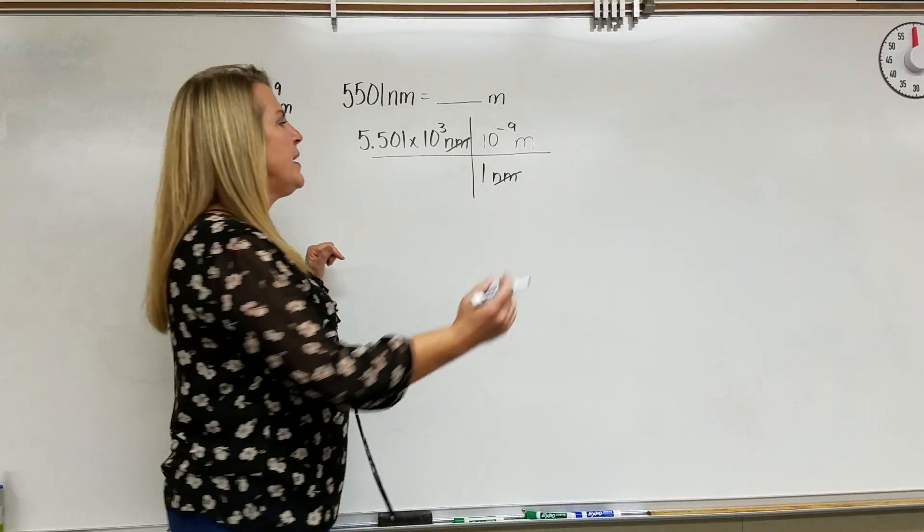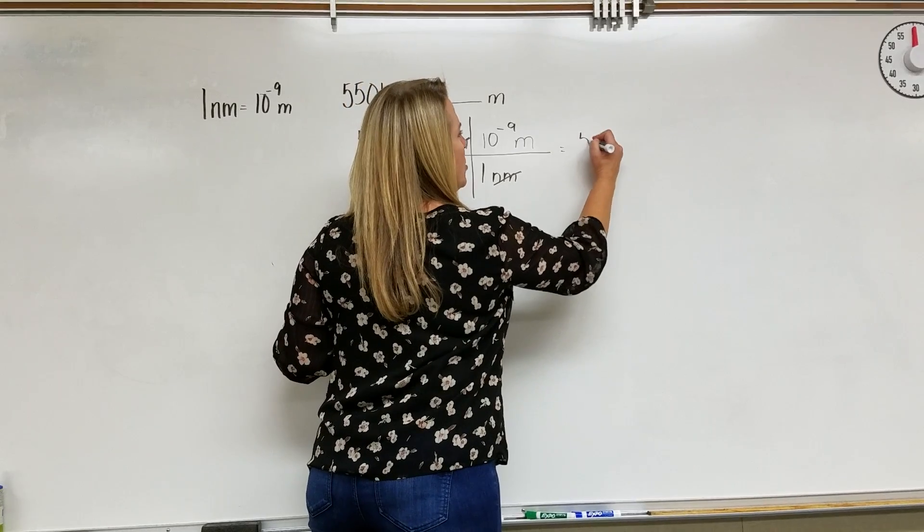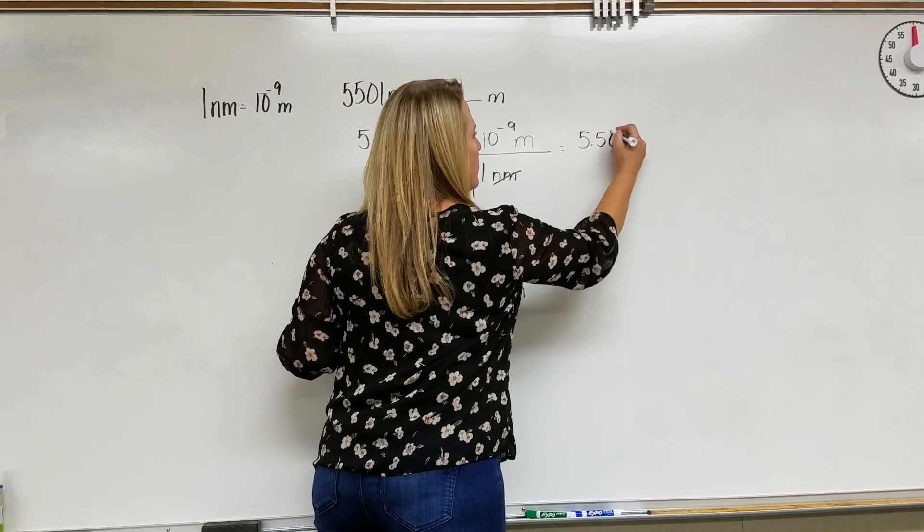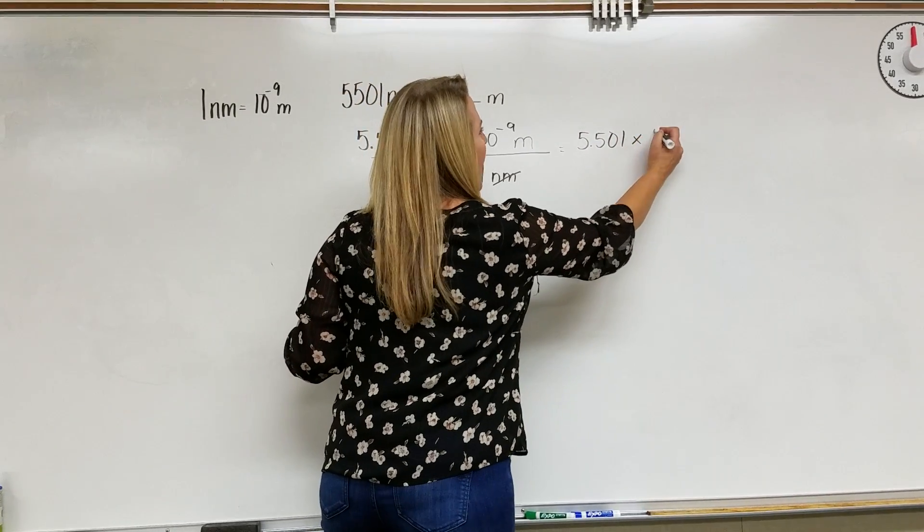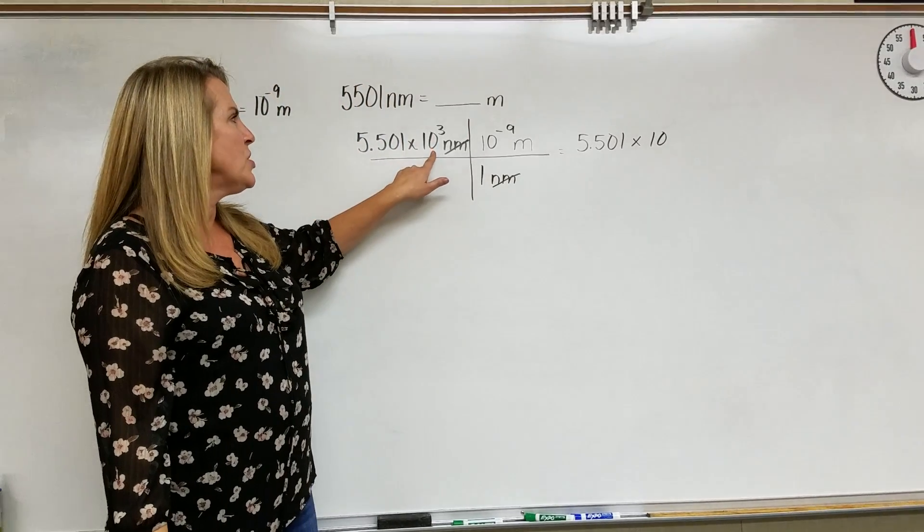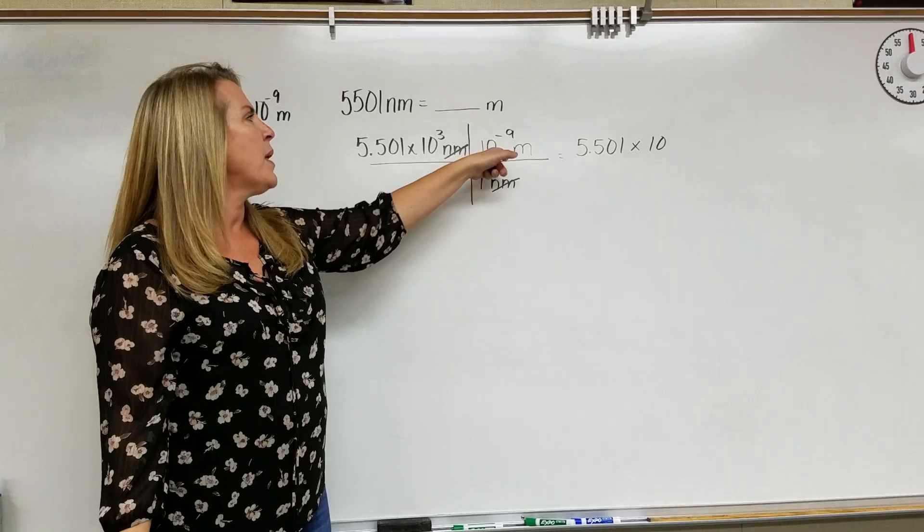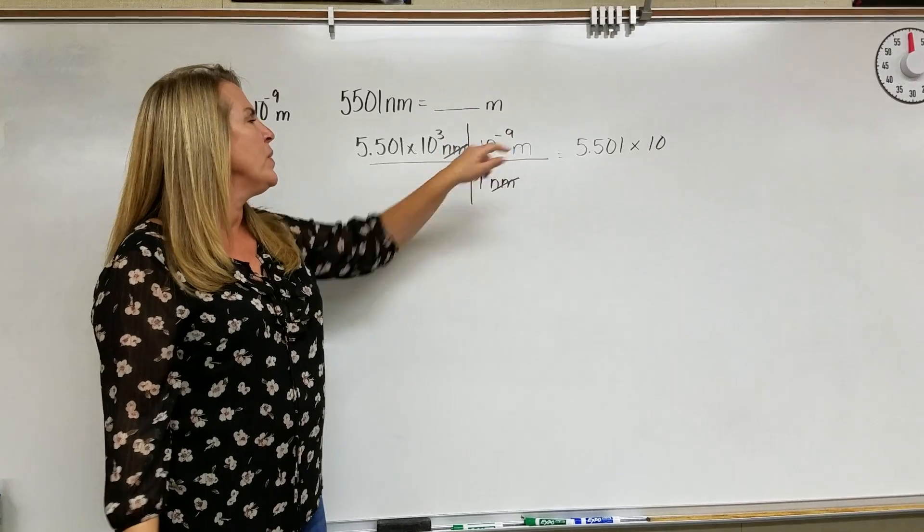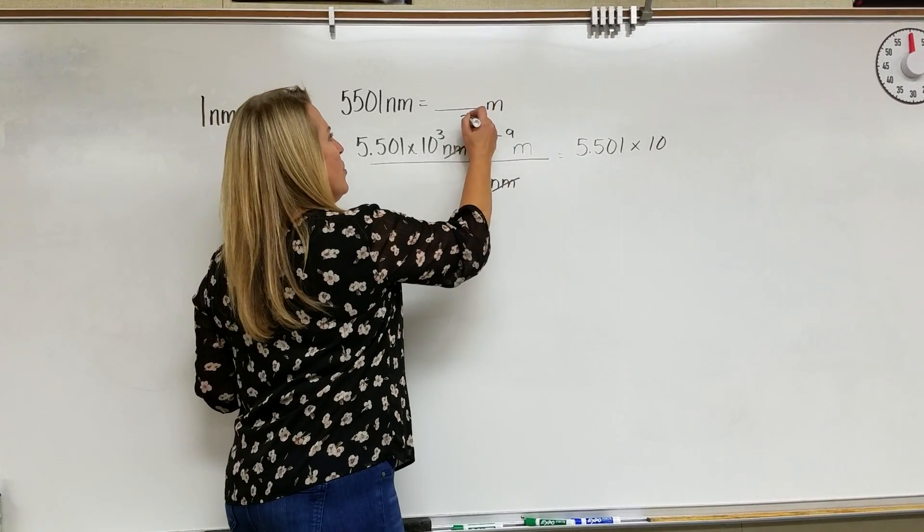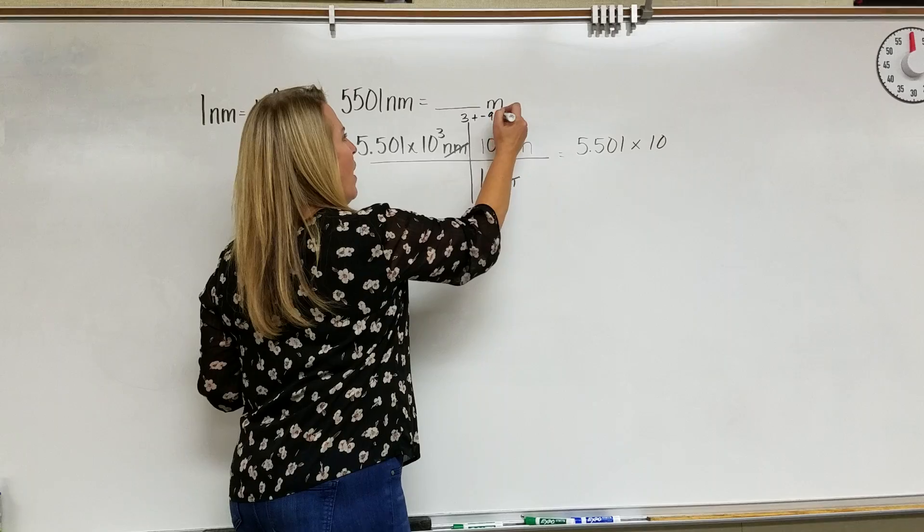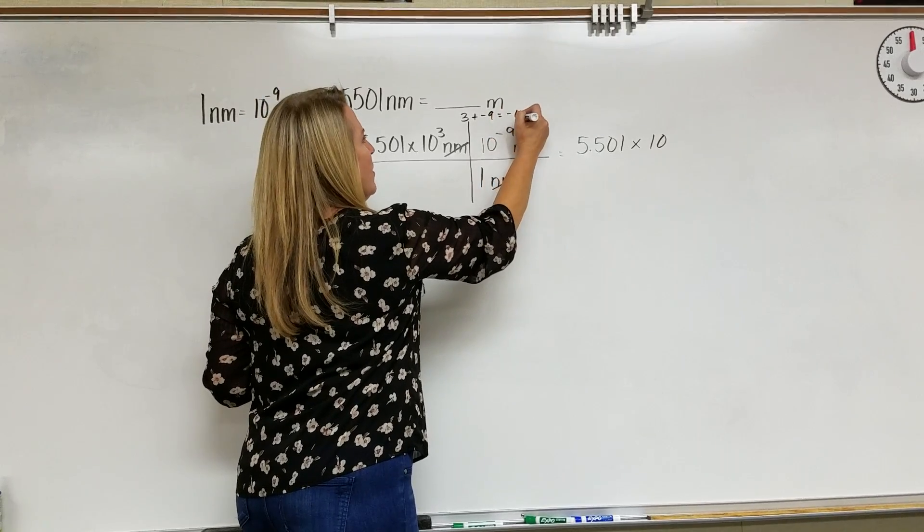5.501 is just going to be multiplied and divided by 1, so that's going to carry. So now all we have to do is deal with our powers of 10. 10 to the third times 10 to the minus 9. When we multiply exponents, we add them. So that's going to be 3 plus negative 9 or negative 6.